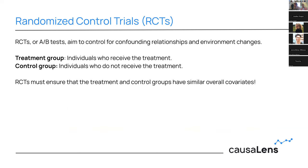This is where randomized controlled trials, or RCTs — also known as A/B tests — come in. They aim to control for confounding relationships and environment changes. They do this by specifying a treatment group, who receive the treatment or product, and a control group, who do not. RCTs must ensure that the treatment and control groups have similar covariate distributions — for instance, similar age, income, education, and wealth distributions — so that we can estimate an unbiased causal effect.